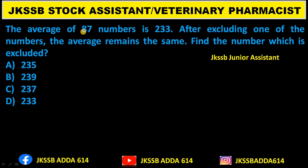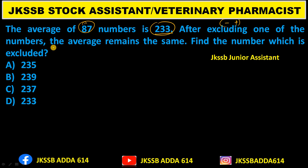My first question: the average of 87 numbers is 233. I am reading questions here with the help of short tricks. After excluding one of the numbers, the average remains the same. Find the number which is excluded. The average is 233, total numbers are 87. Remember the a+nd formula.